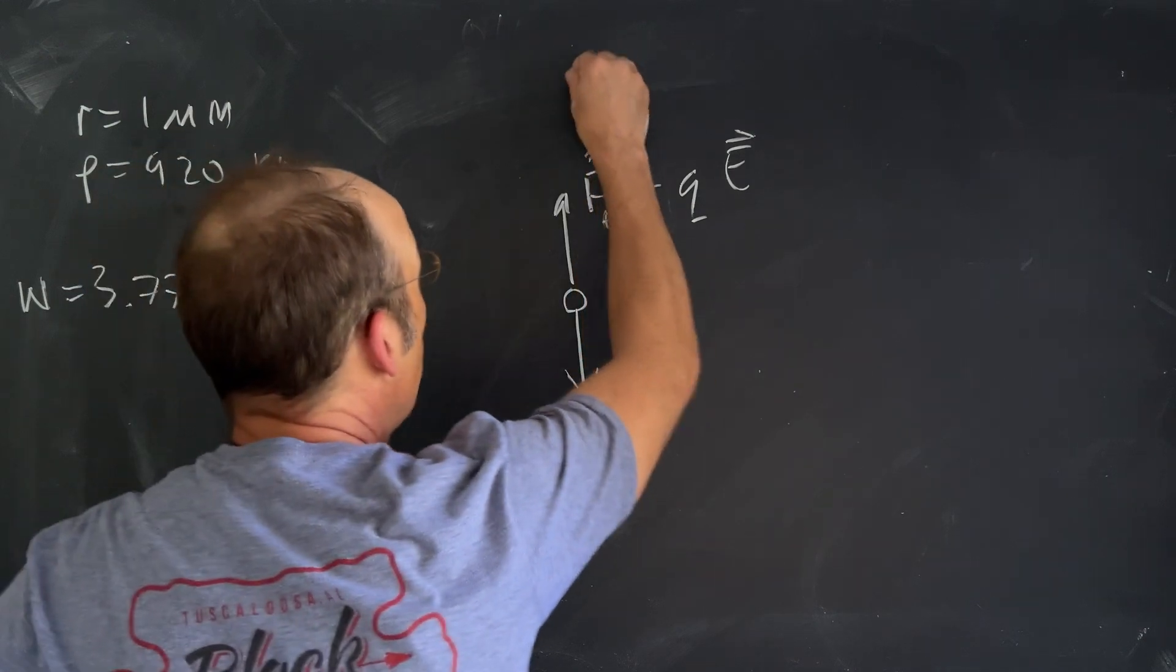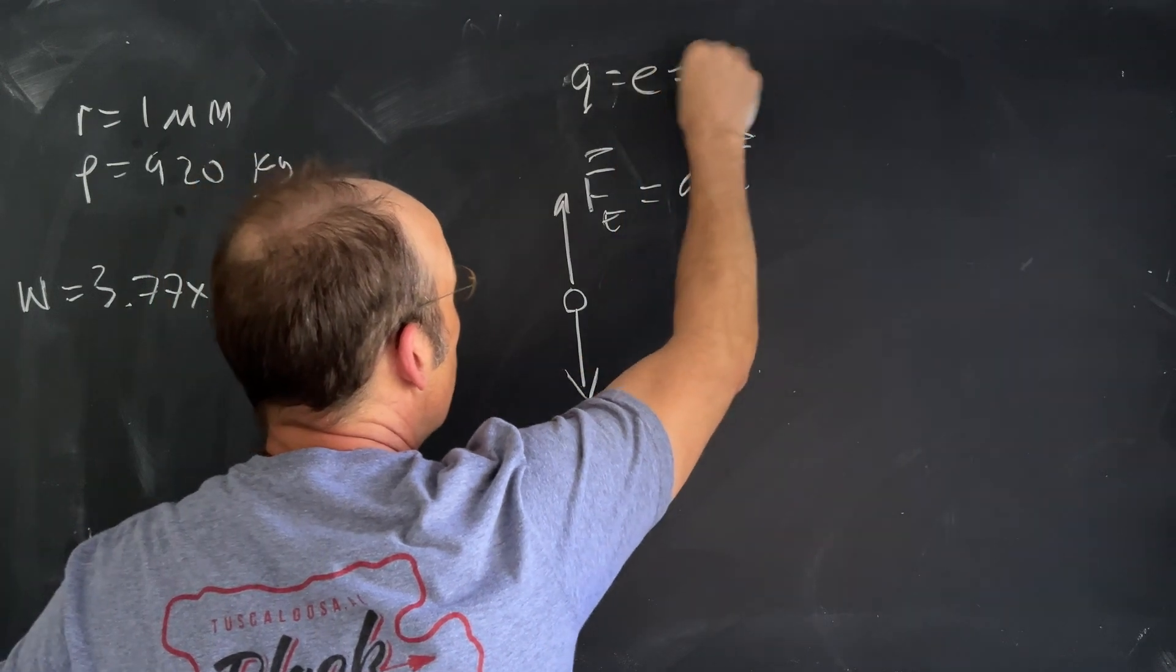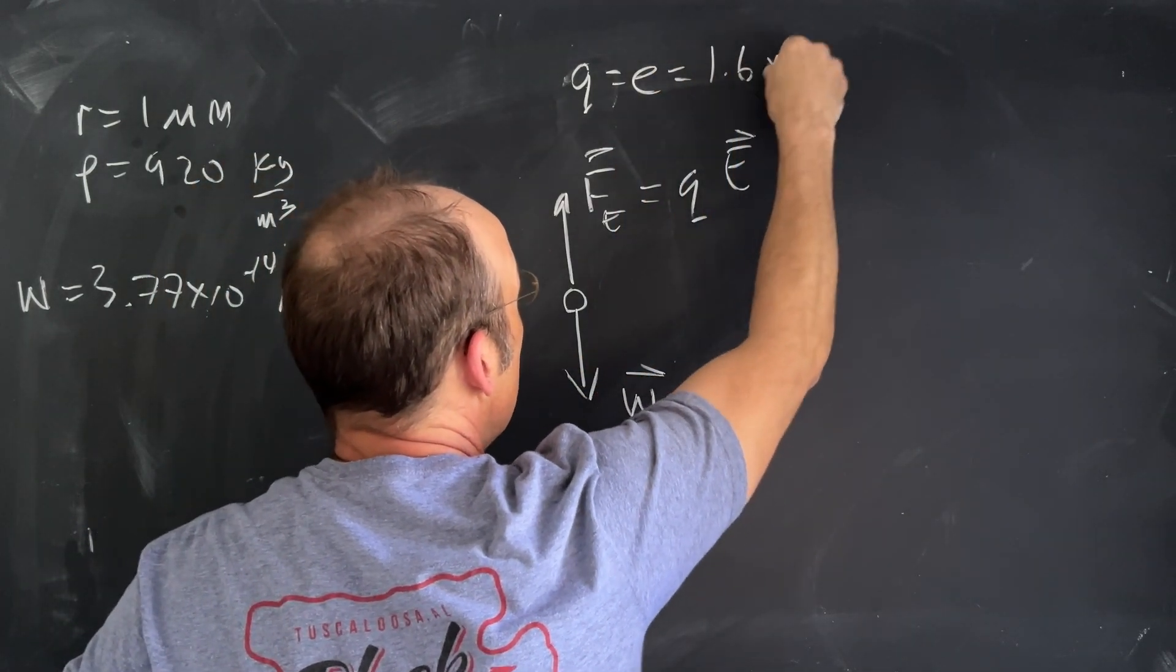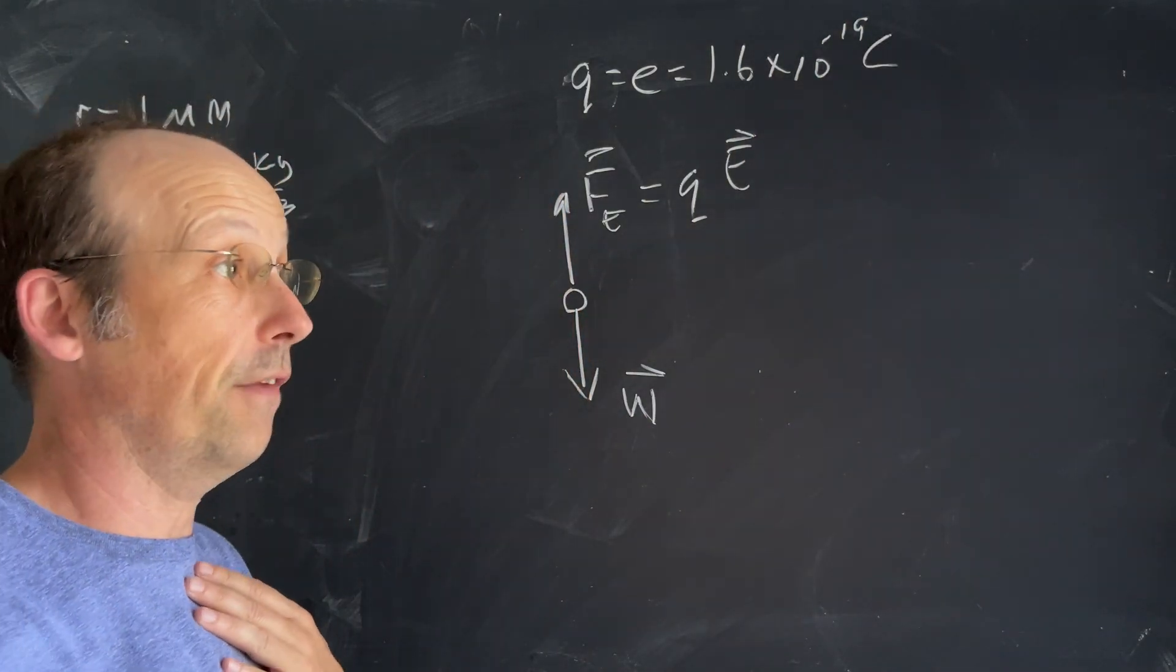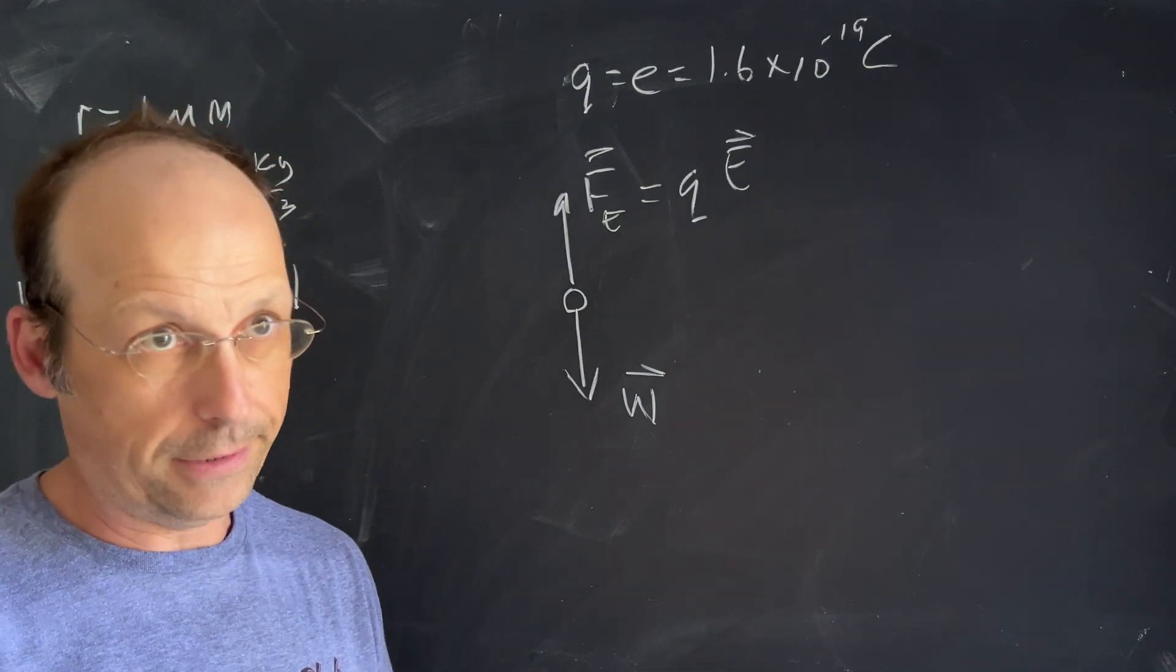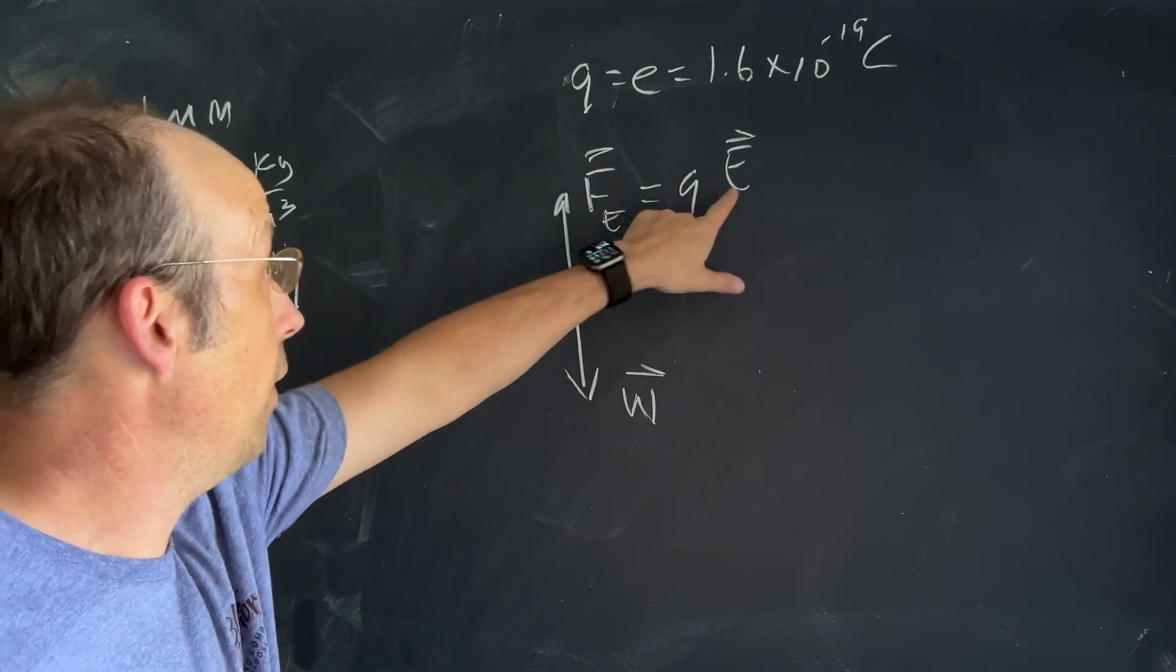In this case the charge Q is e, which is 1.6 times 10 to the negative 19 coulombs. You don't need to memorize that. I just memorize it because I've done it for like 30 years. So I know the charge and I want to find the magnitude.